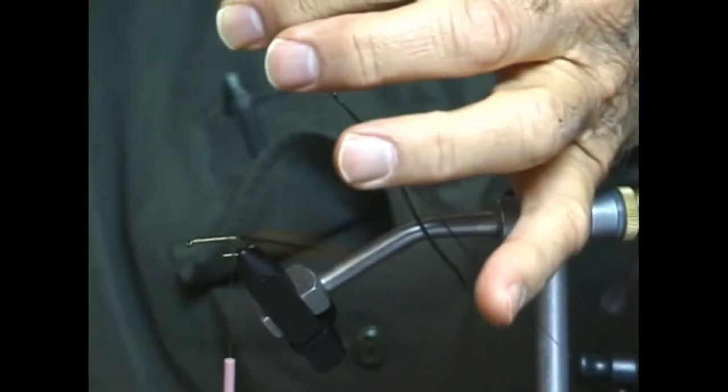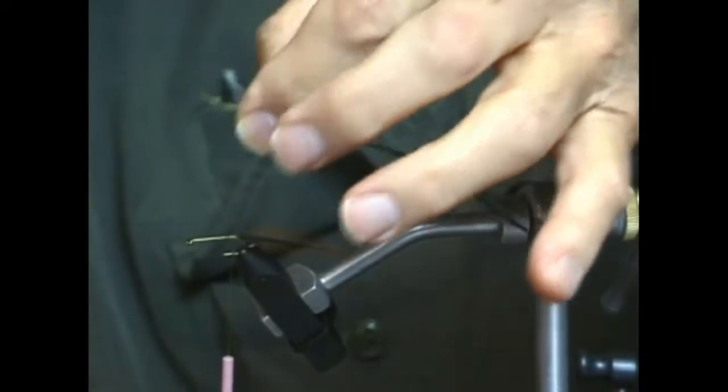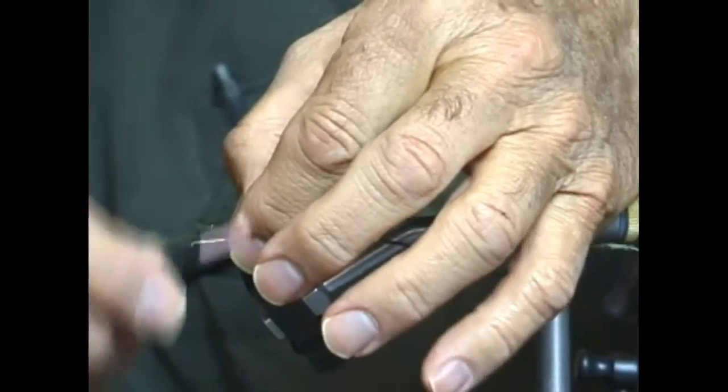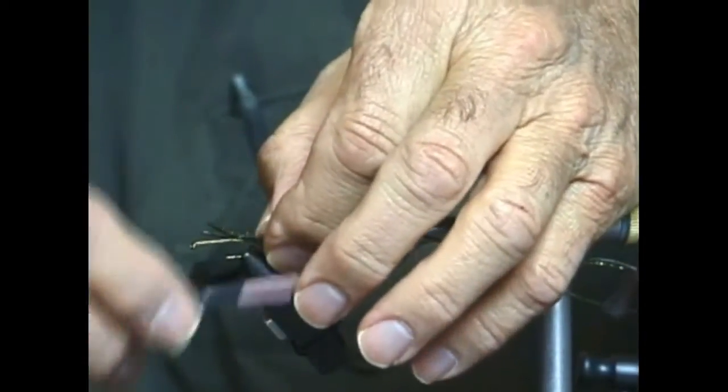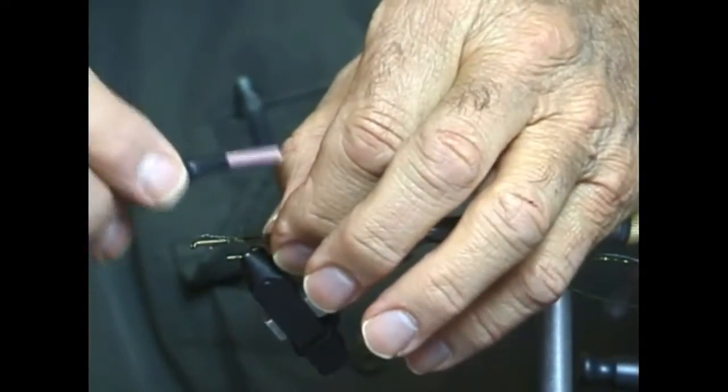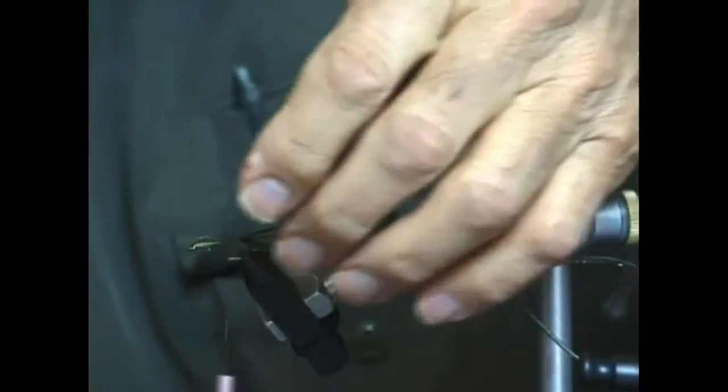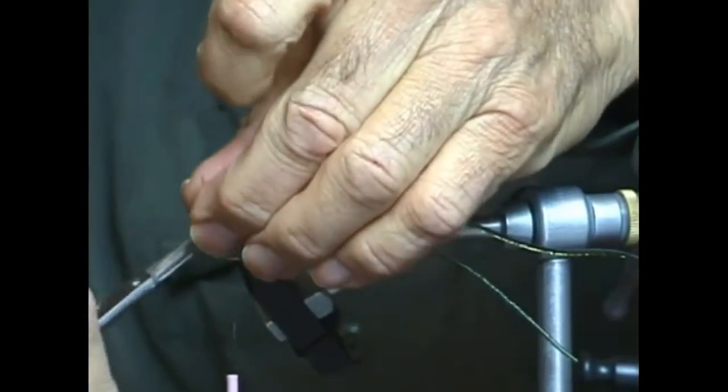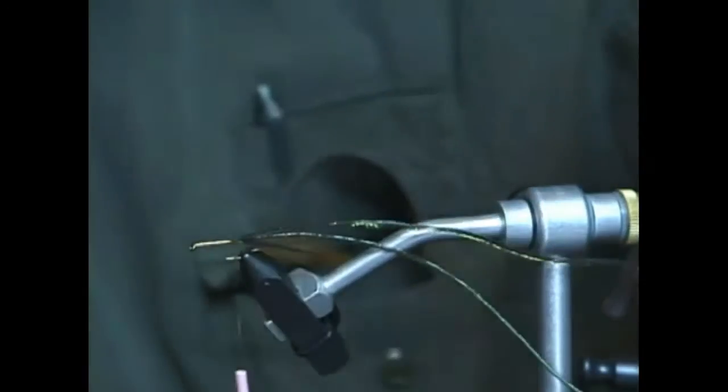The crackleback is two strands of peacock tied in on top of the hook shank at the end of the hook shank with thread wraps just as we did the saddle hackle. Now I'm going to cut out the waste and the crackleback is tied in.